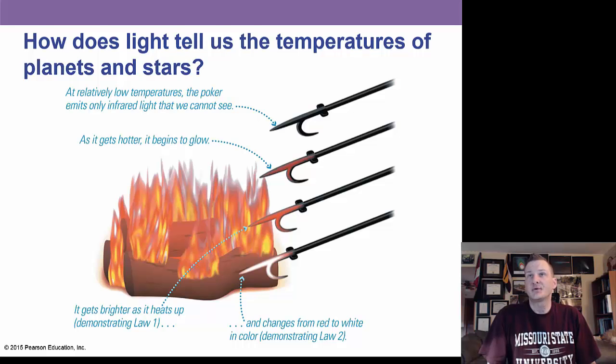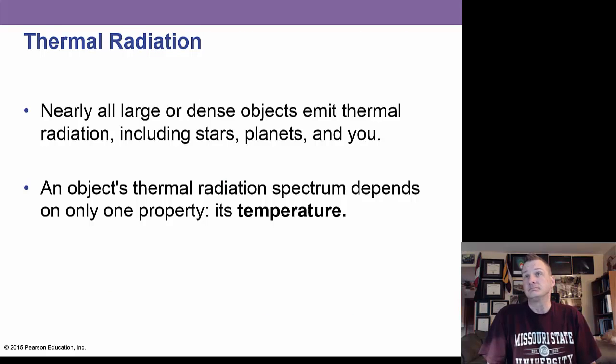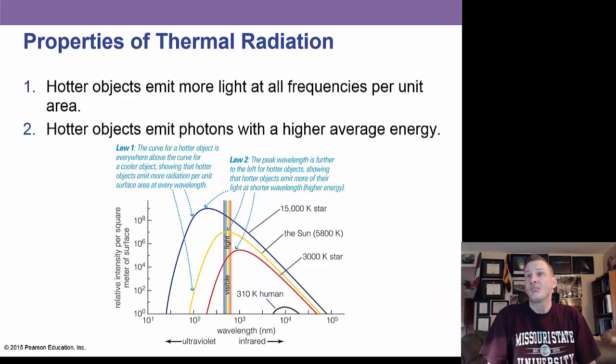Light can tell us about the temperatures of a planet and stars, too, depending on the color of it. An object's thermal radiation spectrum depends on one property and that's its temperature. We see here that hotter objects emit more light at all frequencies per unit area. And hotter objects will emit a higher average energy. If you have a star at 16,000 degrees Kelvin, it's going to emit more in the blue, whereas a cooler star, the kinds I researched as a grad student, are more red. They're at a lesser temperature, 3,000 degrees.